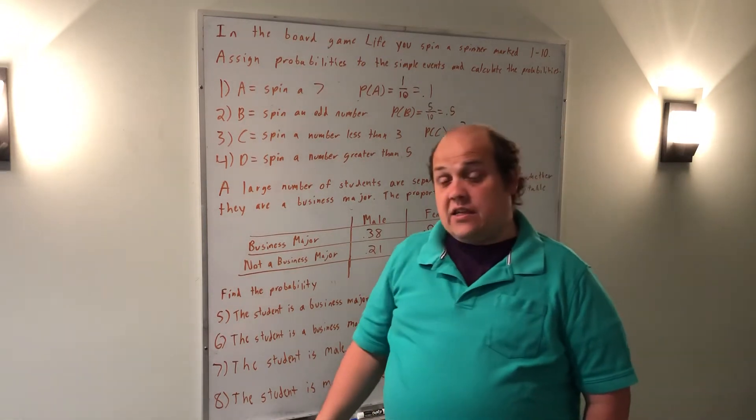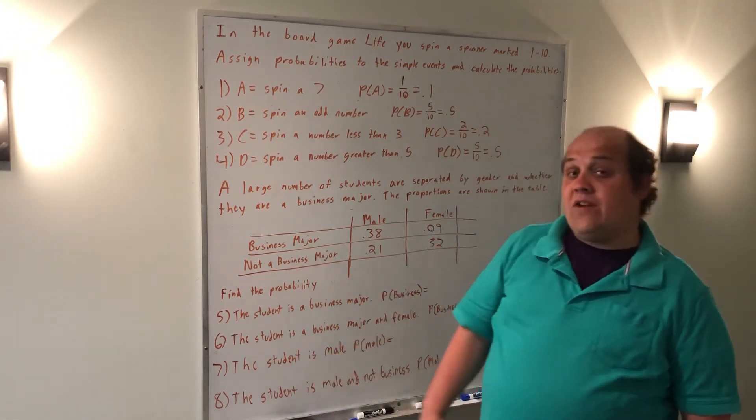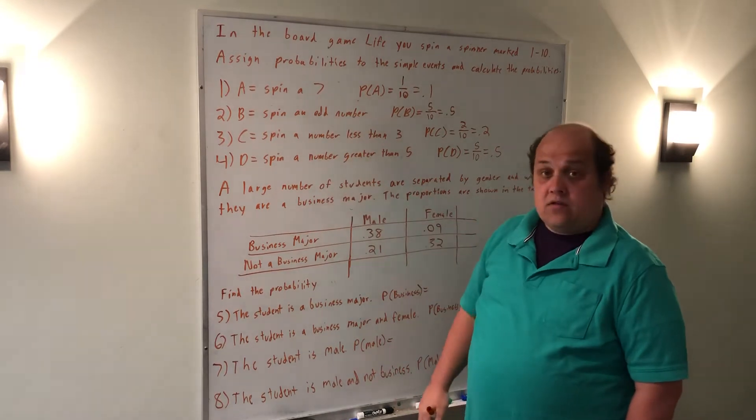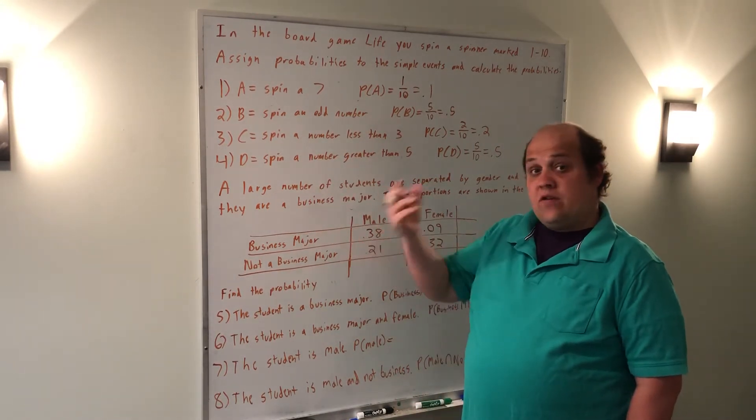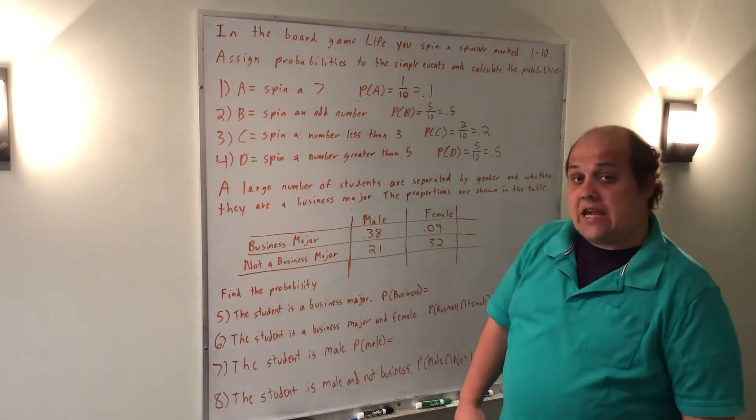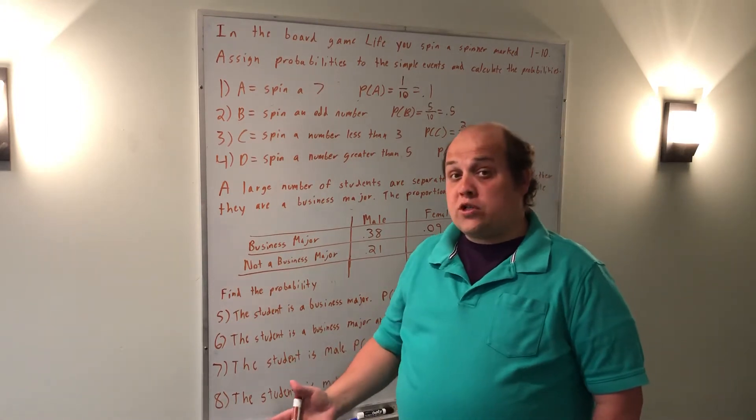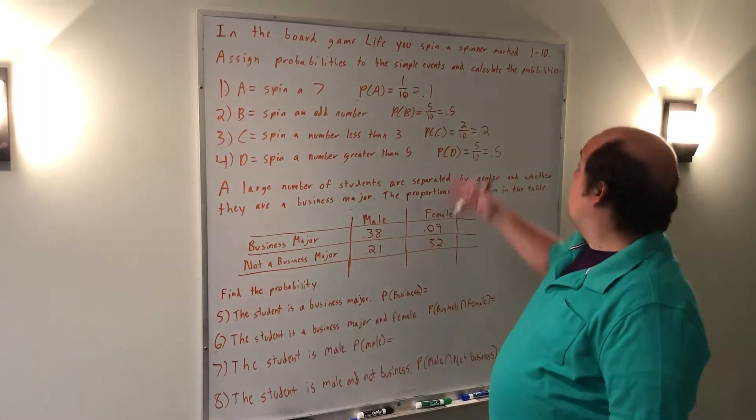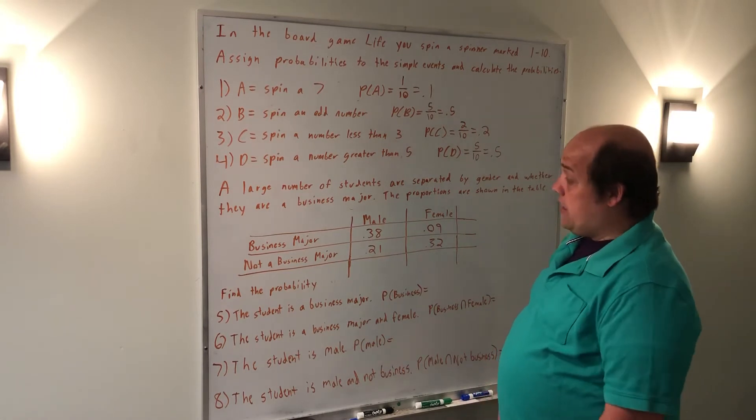So the general skill here is figure out how many simple events fit the lettered event, take that number divided by the total number of events in the sample space. This only works when we know everything is equally likely. But when we have the spinner, we do know they're all equally likely.